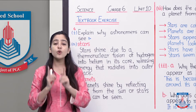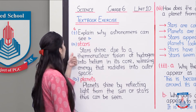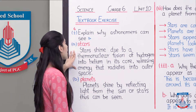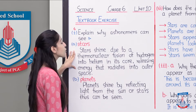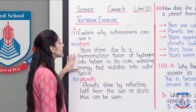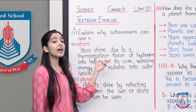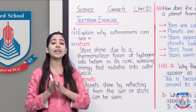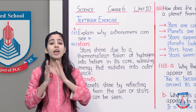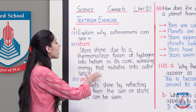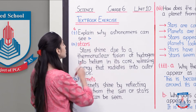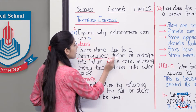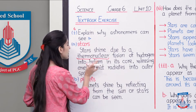Ab ye kaise hota hai, dono ko A aur B karke samajhte hain. A is stars. Stars shine due to a thermonuclear fusion of hydrogen into helium in its core, releasing energy that radiates into outer space. Stars ek luminous object hain — woh apni energy, apni light khud produce karte hain. Ab woh light kis tarhan se produce hoti hai — stars shine due to a thermonuclear fusion of hydrogen into helium.